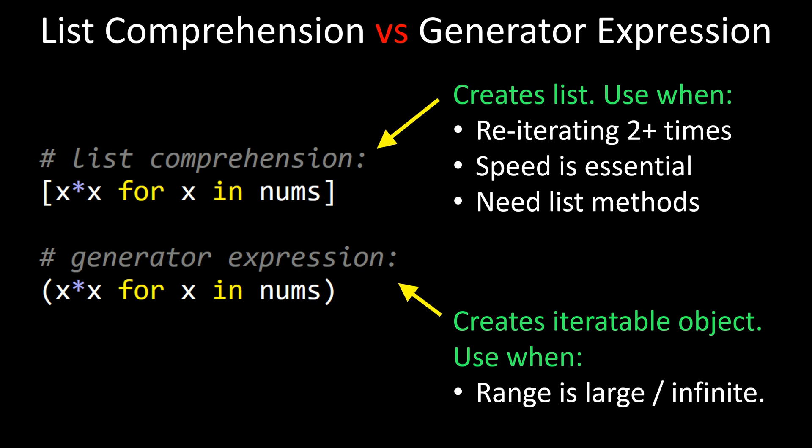It could be 2 to 3 times faster. So if speed is essential, you want to use these. And if you need different list methods, like especially the slicing notation, you should be using list comprehension.